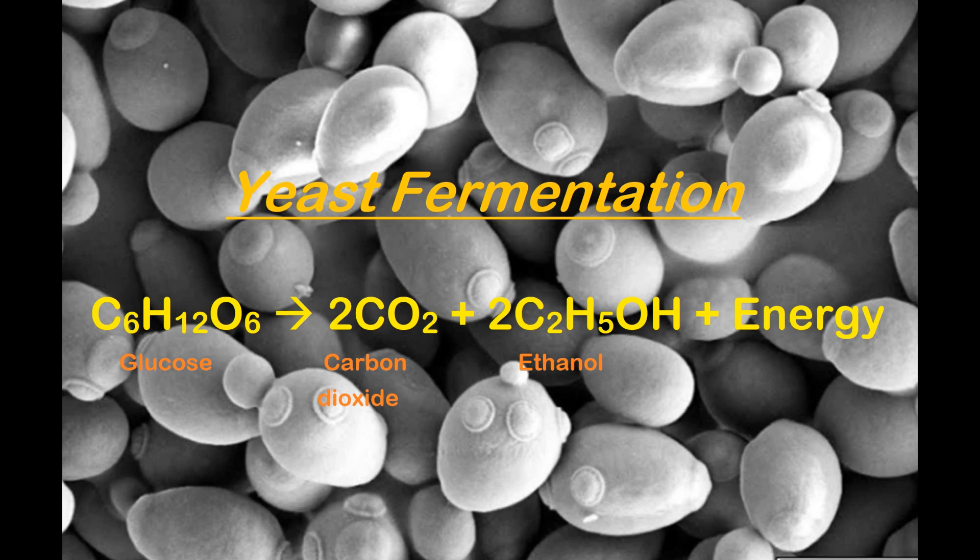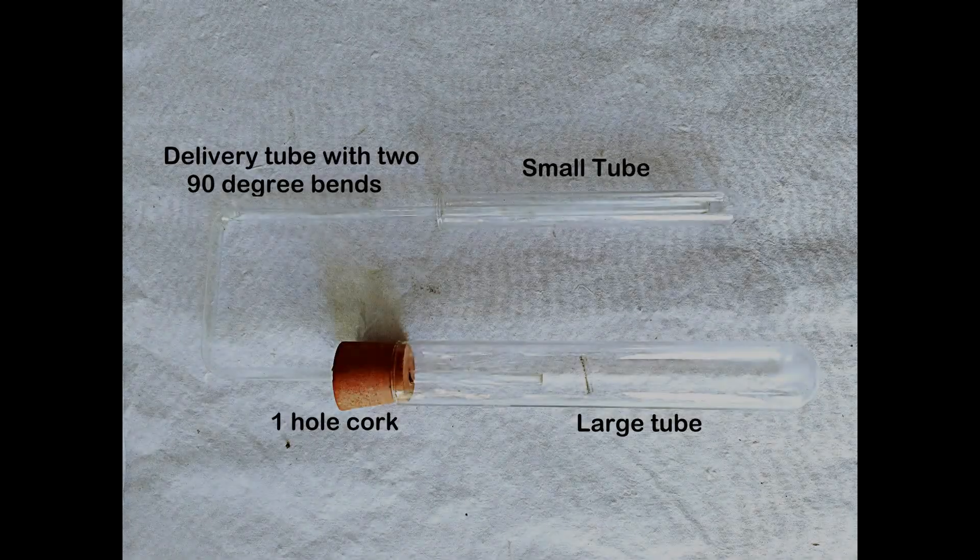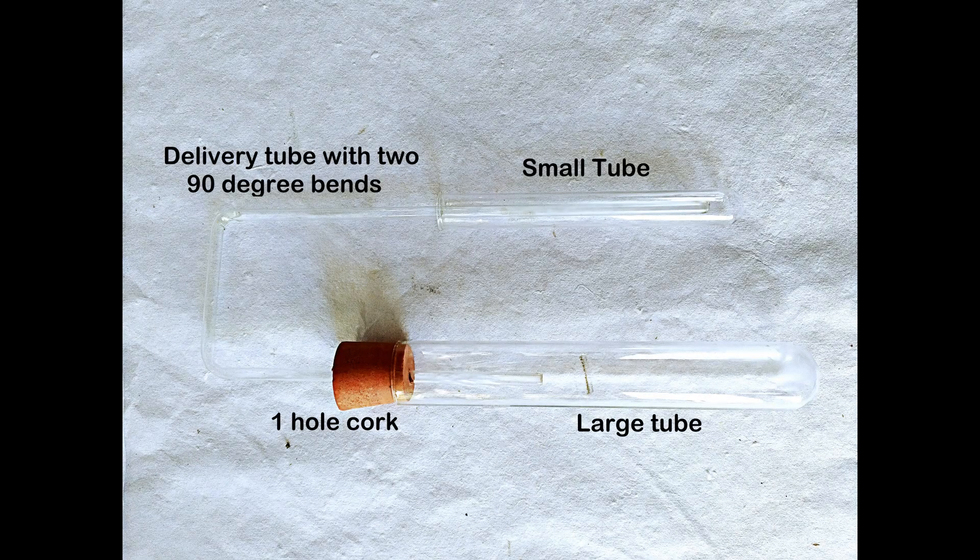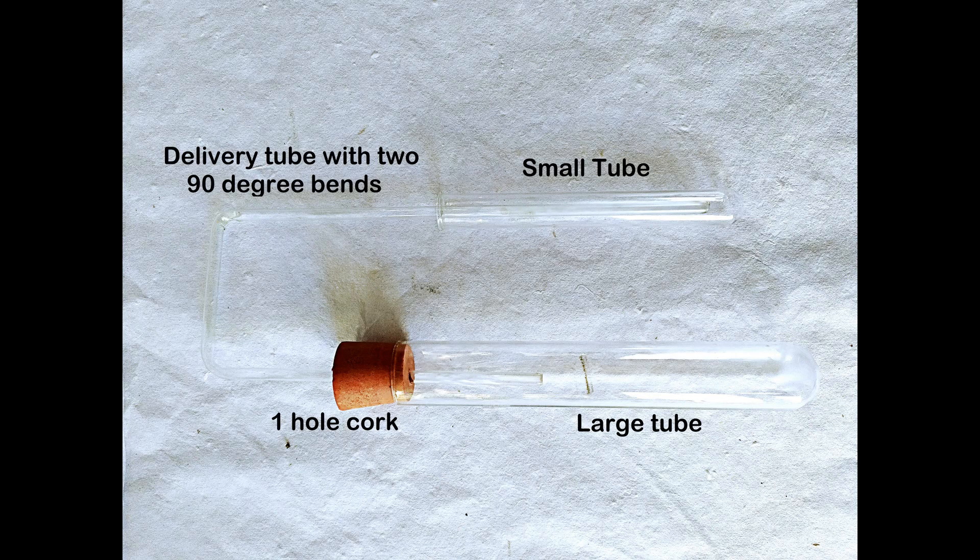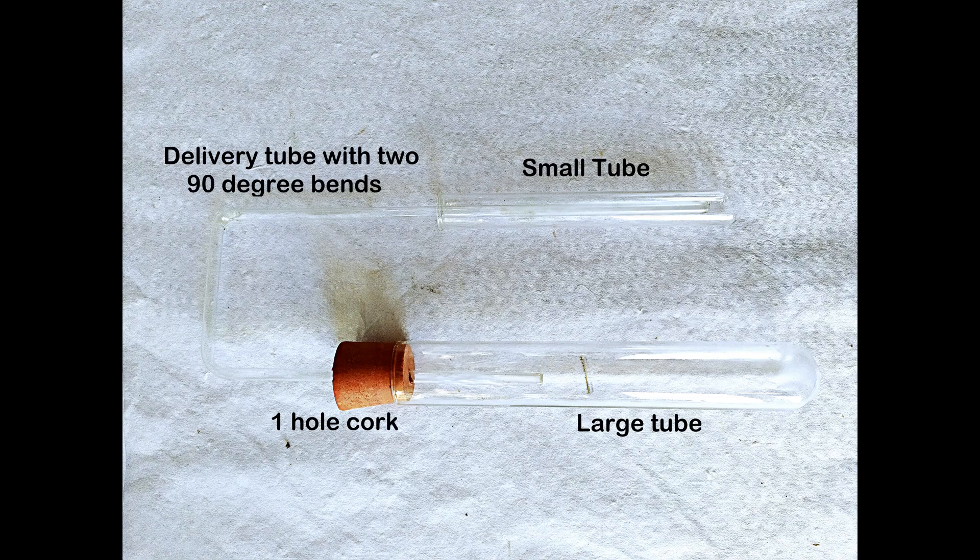For this experiment, we'll need a fermentation setup consisting of a large test tube with a tight-fitting one-hole rubber cork through which is inserted a delivery tube bent at 90 degrees in two places. One end of the delivery tube reaches a few centimeters into the large test tube while the other end reaches to the bottom of a smaller test tube.